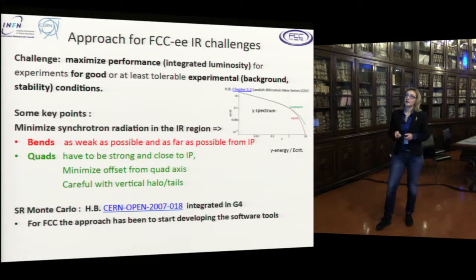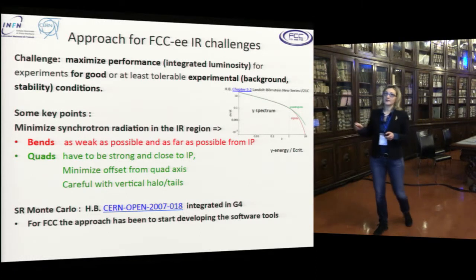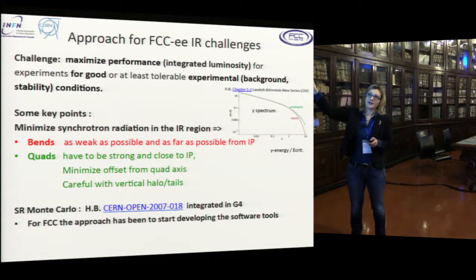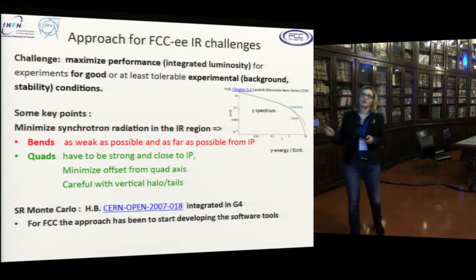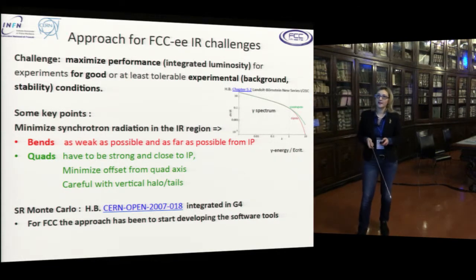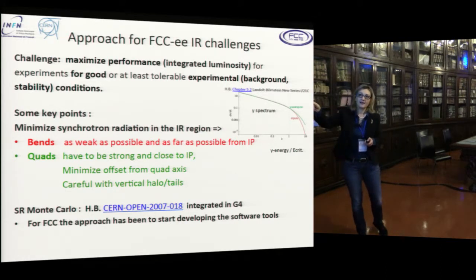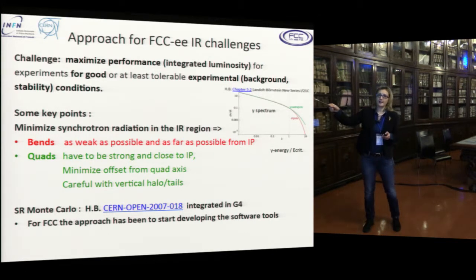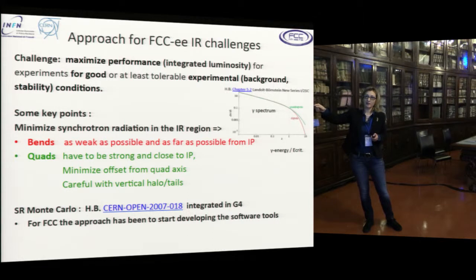The approach we have been using for FCC-ee is that the key points are: we want the bends in the interaction region to be as weak as possible and as far as possible from the interaction point; the quadrupoles have to be strong and close to the IP to minimize the offset from the quad axis; and we must be careful with vertical halo tails. For this, a synchrotron radiation Monte Carlo has been implemented.